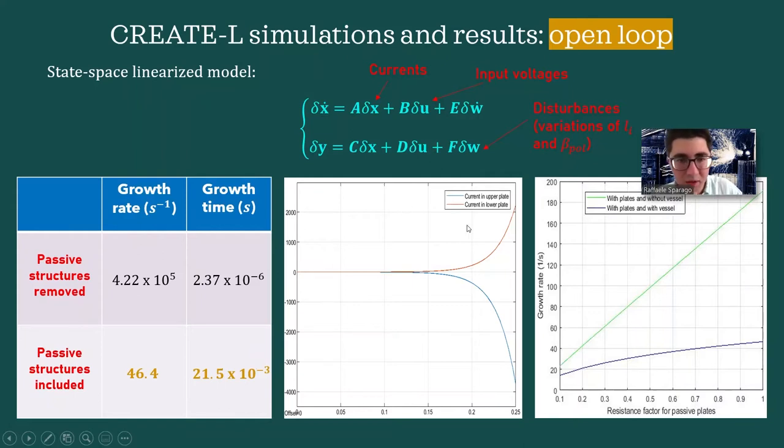Now, in the central picture, we see the evolution of the eddy currents that I was talking about that show opposite polarities, and they follow the system's eigenmodes. In the final picture, here we see a parametric analysis of the system's growth rate depending on the resistance of passive plates for different configurations of the machine's components.